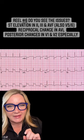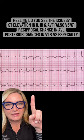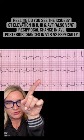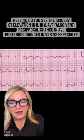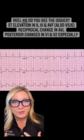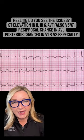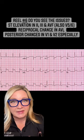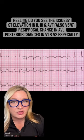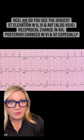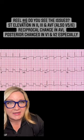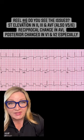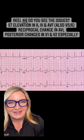To find a posterior wall MI, let's go to leads V1, V2, and V3, and we're going to look for the reciprocal change. The posterior wall is on the back and we don't have leads on the back, so we're going to find the reciprocal change in V1, V2, and V3. And what we see here is significant ST depression, which signifies there's posterior wall involvement.